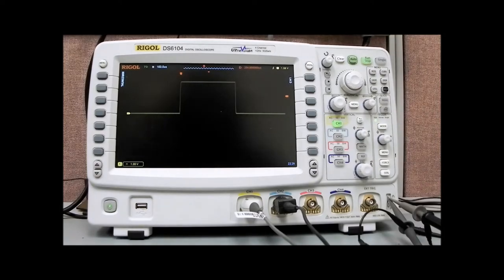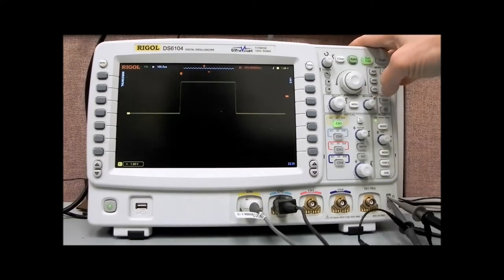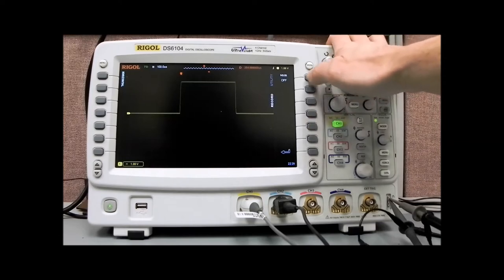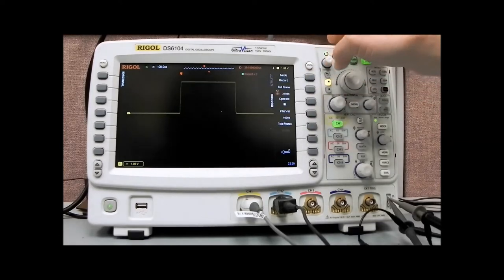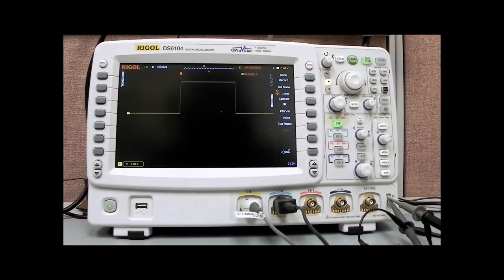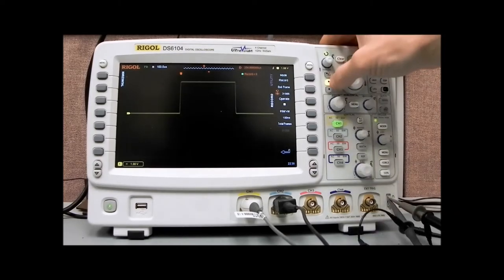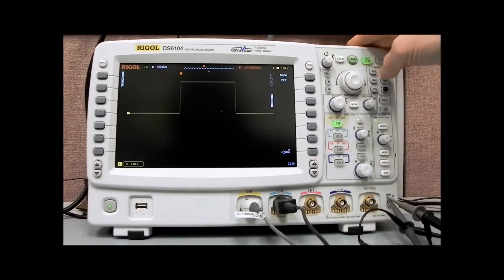Now I'm going to show you the record features and then we're going to go through the pass-fail analysis function. To get to record, we're going to press utility, open up the record menu, and then enable record. You'll see that now we have 3,986 end frames. You can think about a frame as a bitmap image of the displayed values on the screen. The number of frames we have directly corresponds to how much data we collect per frame. To access the data collection, most of the time the scope's going to be running in auto mode.